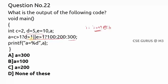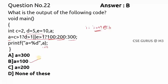Ten is greater than two — true. True OR true is always true. Since the outer condition is true we came here, and this inner condition is also true, so 100 is assigned to a. Printf will print a, and the value will be 100. The answer is B. This is how you evaluate nested ternary operators.